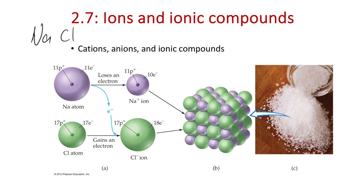Sodium has 11 electrons—it's element number 11 on the periodic table, so 11 protons and 11 electrons. Chlorine is element number 17, so 17 protons and 17 electrons. What makes the noble gases especially stable is their noble gas electron configuration: neon having 10 electrons, argon having 18 electrons. That specific count of electrons is where noble gases get their stability. That's why those atoms exist as monoatomic gases, not forming compounds—that's why we call them noble gases.